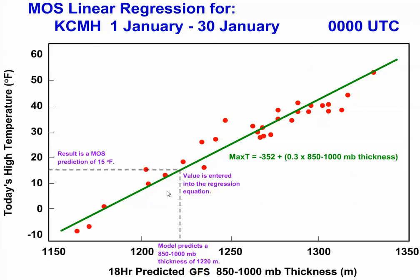Using the line on our graph, or plugging that thickness into our equation, we can find that the corresponding MOS high temperature forecast would be 15 degrees Fahrenheit.